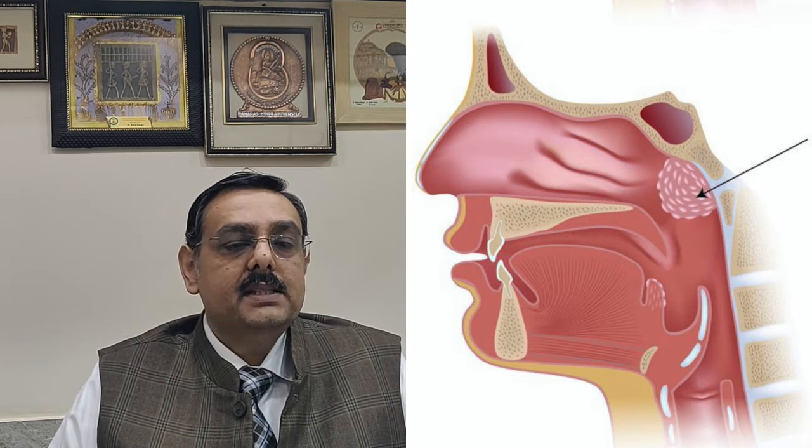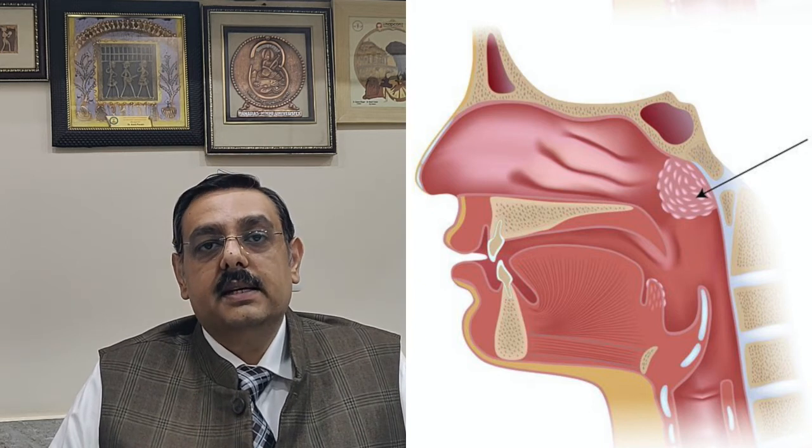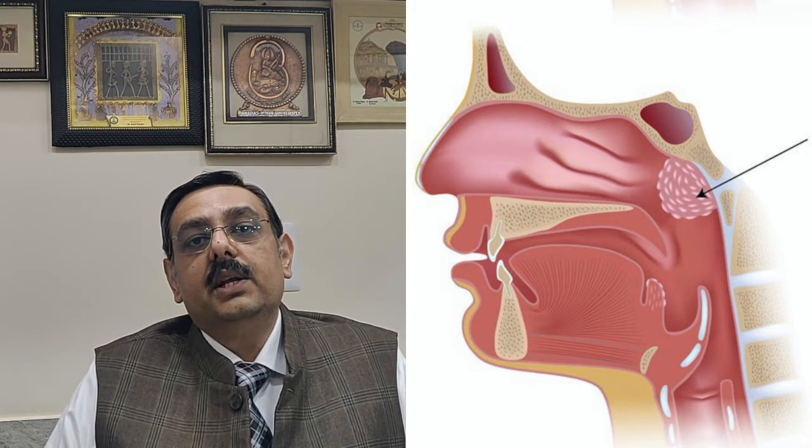The Adenoids are present at the back of the throat, and if the Adenoids are increased in size they can lead to a lot of problems. If the Adenoids are large, the child will not be able to breathe through the nose and will constantly breathe through the mouth, leading to a persistently blocked nose, a runny nose, and mouth breathing with the mouth kept open.